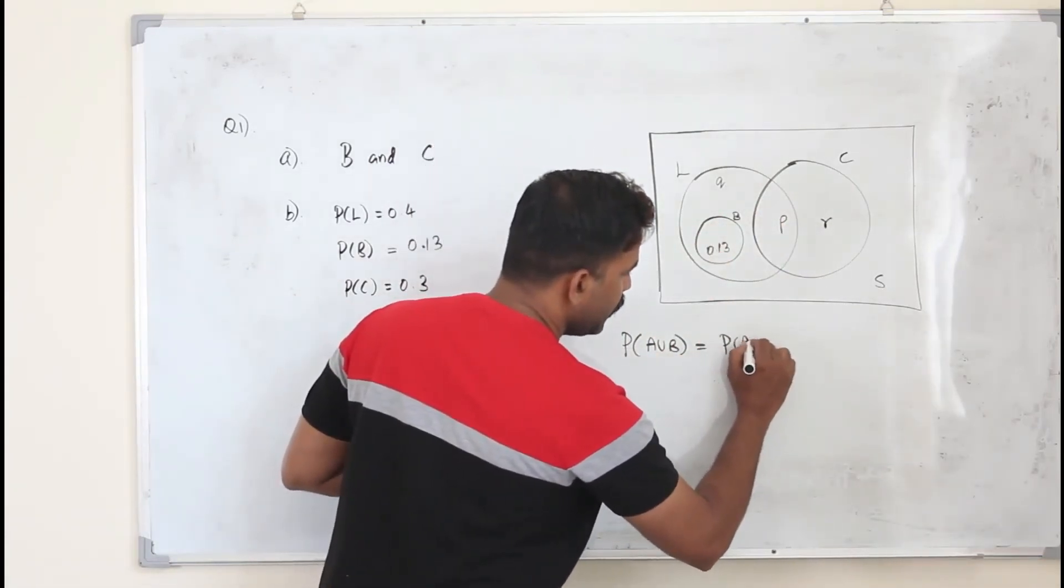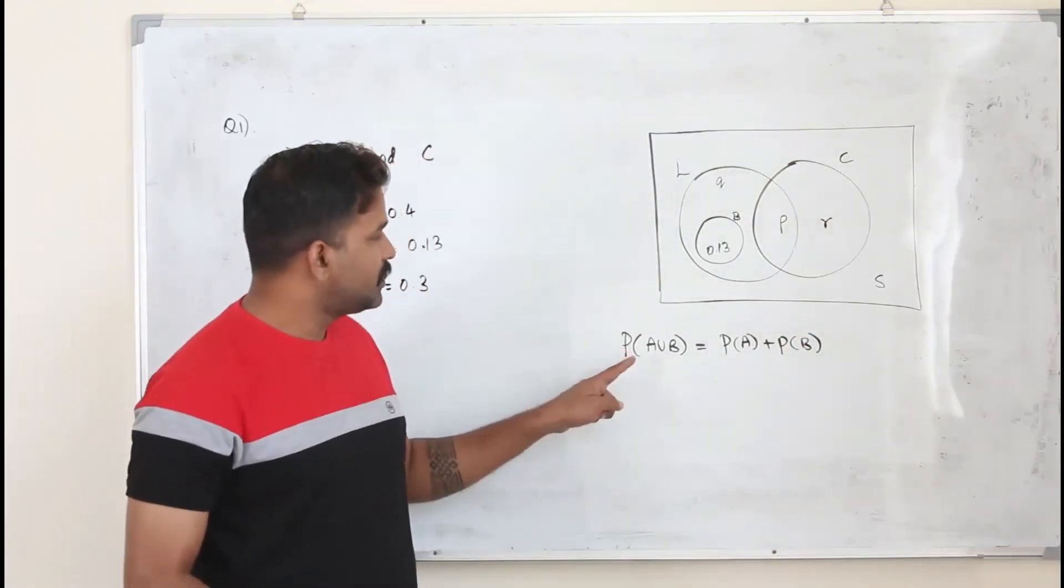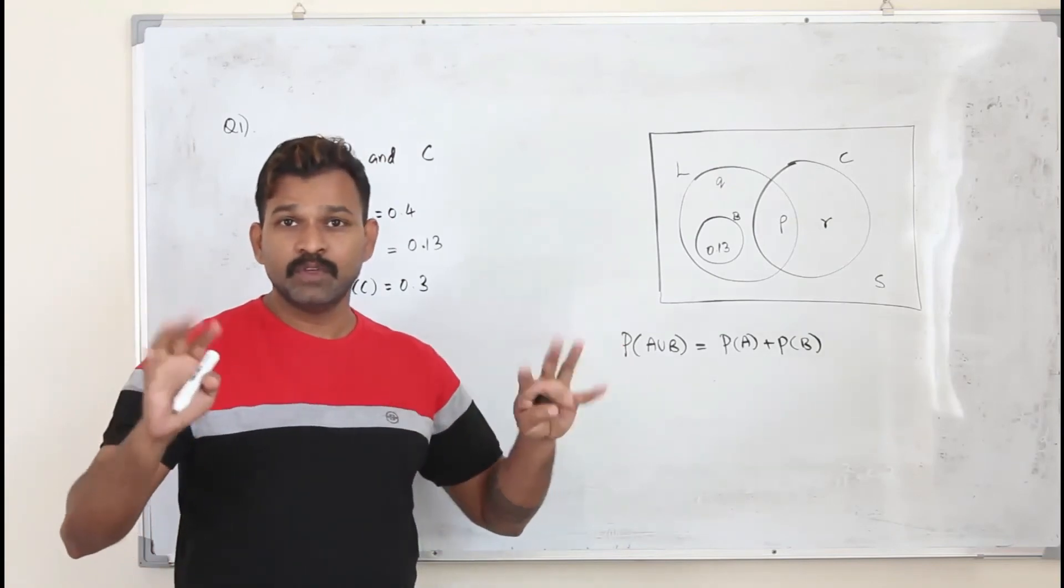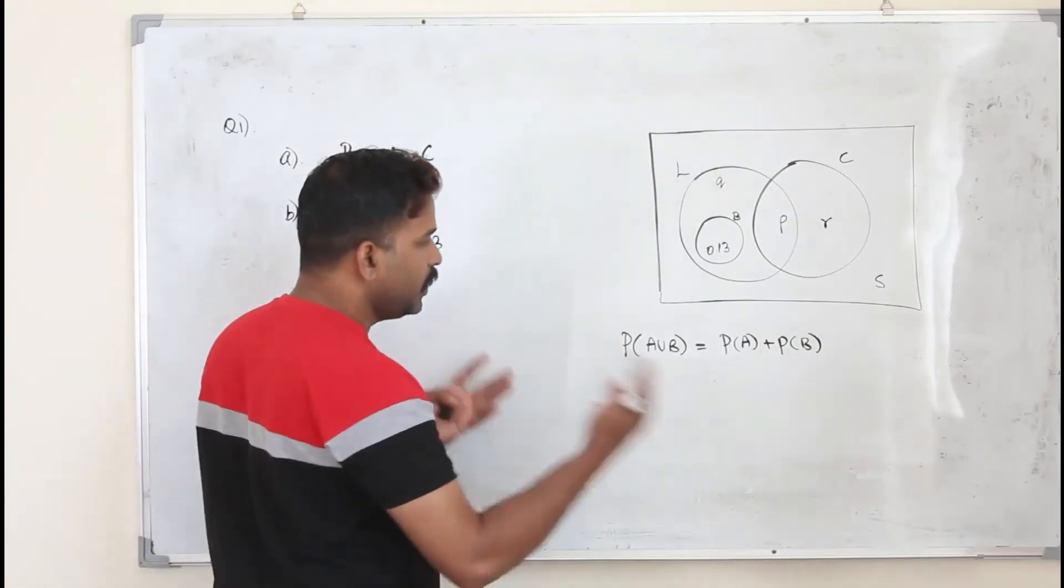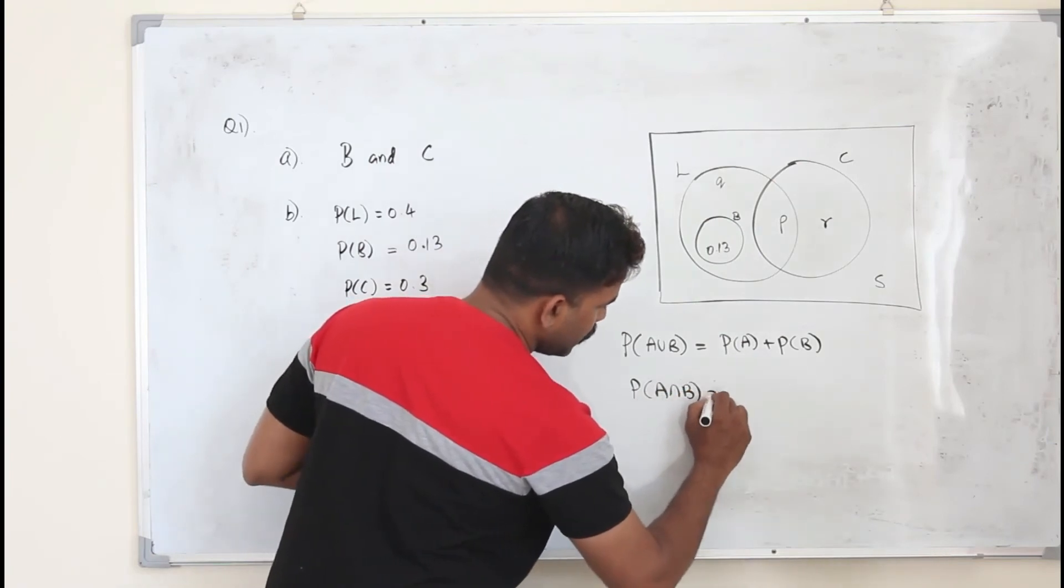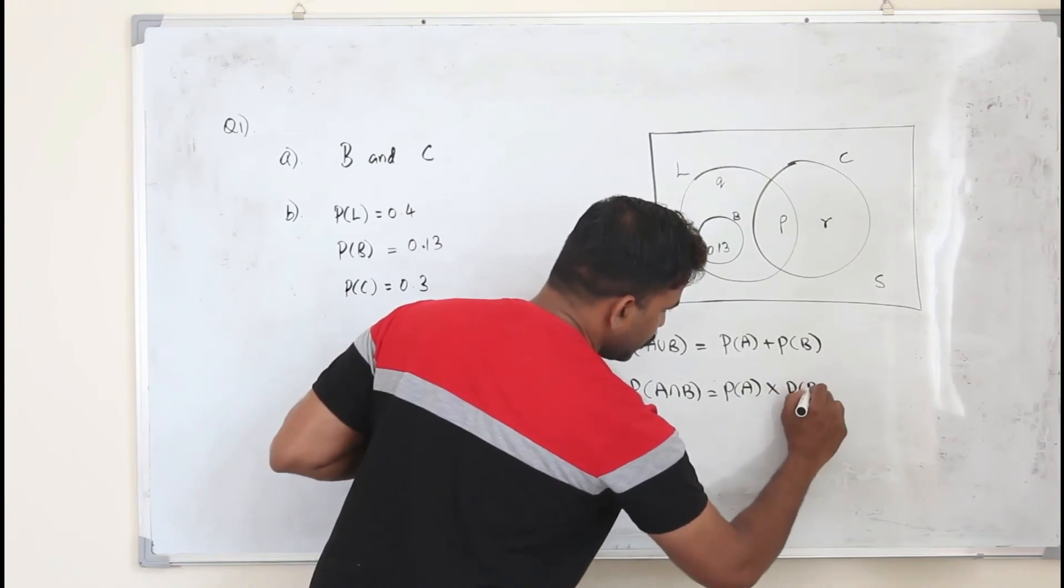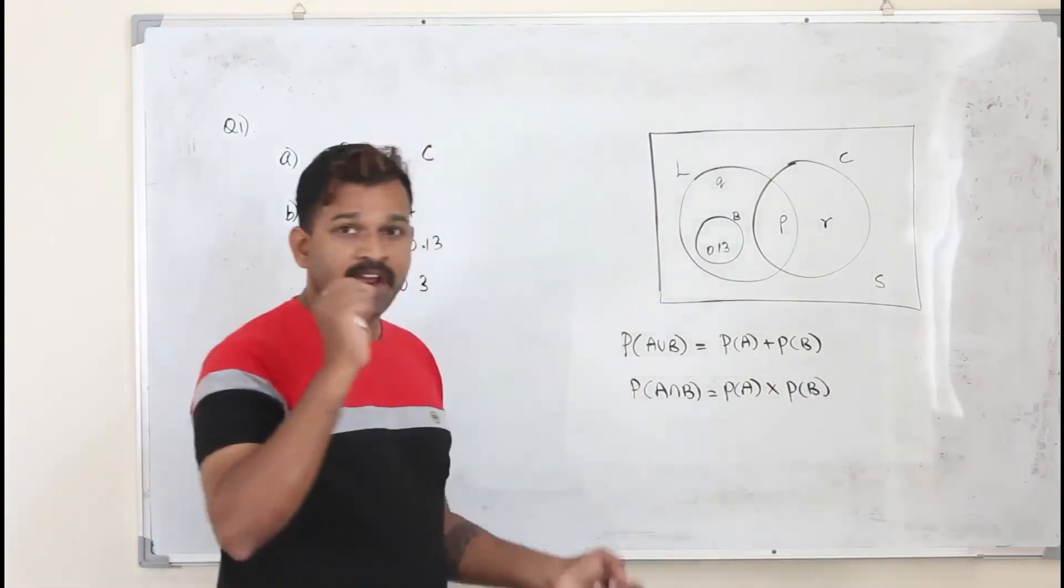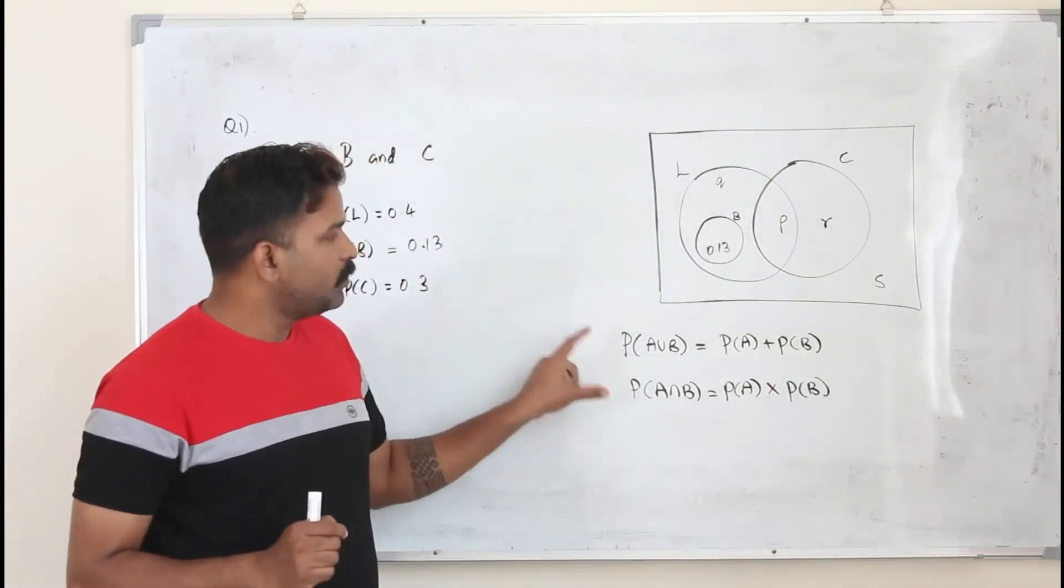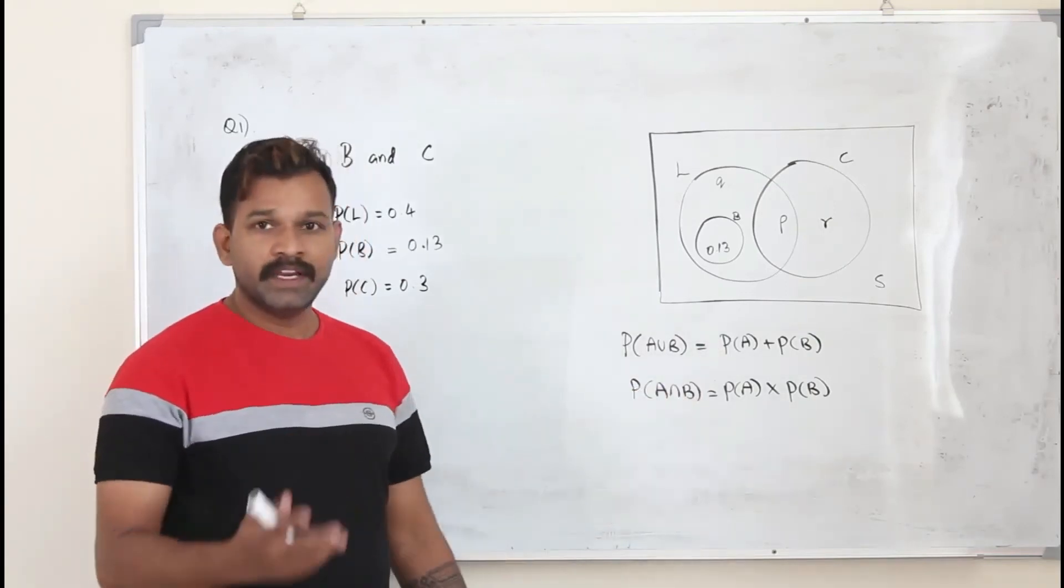So P of A plus P of B, because there is no intersection. That's the first rule if two events are mutually exclusive. If two events are independent, A intersection B is P of A times P of A. These two are very important rules. First one for mutually exclusive, second one for independent.